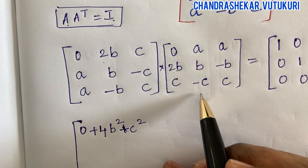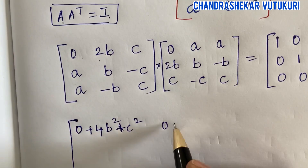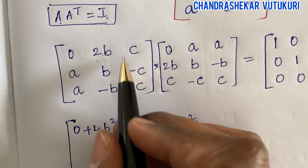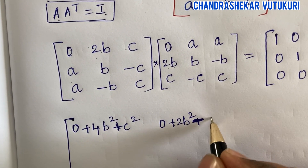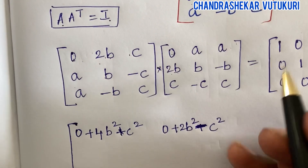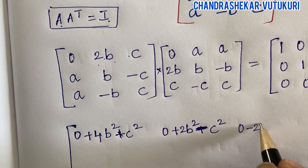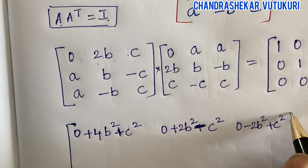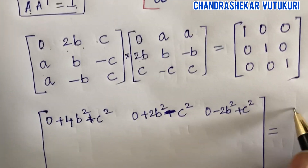For the next element in the first row, this row multiplied by the second column: zero times a is zero, 2b times b is 2b squared, and c times minus c is minus c squared. For the third element: zero times a is zero, 2b times minus b is minus 2b squared, and c times c is plus c squared.